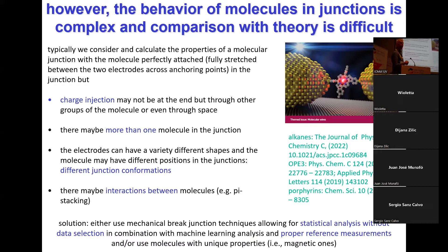Why do I like magnetic molecules? Magnetic molecules have unique features. And that means that if you have spurious effects, it's much easier to identify them, because you can say these features are from molecules that are not magnetic. The magnetic molecules give you unique signatures that you can look for, and that makes the interpretation of your data much, much easier.